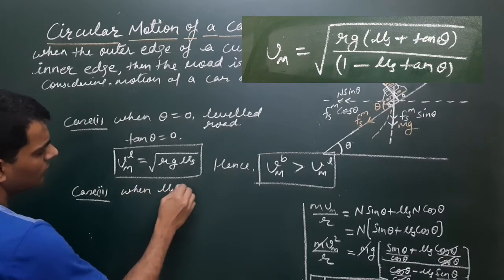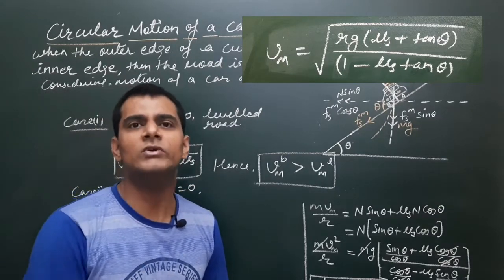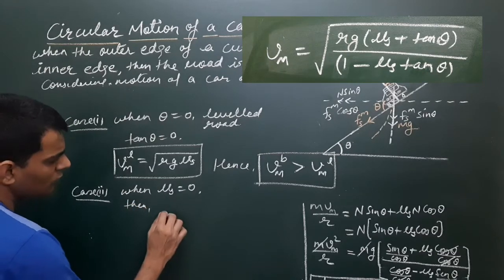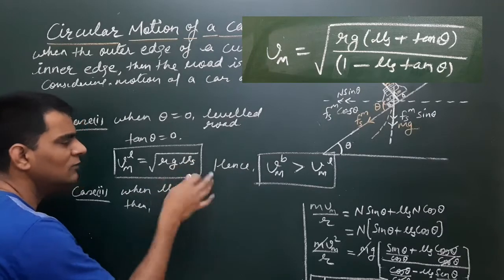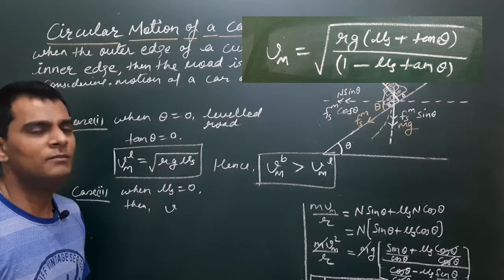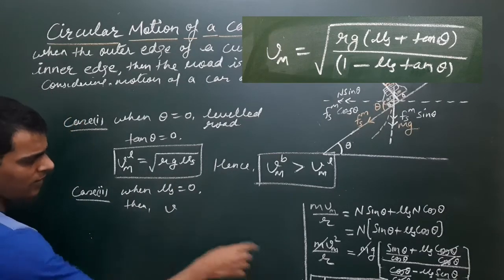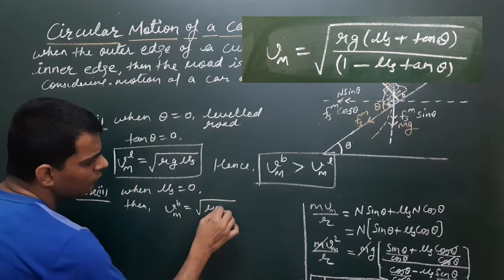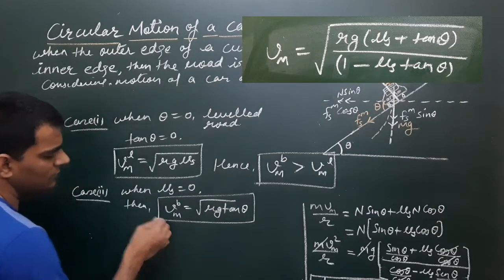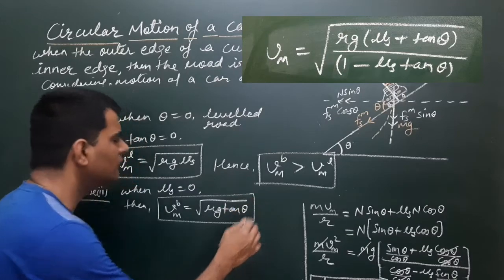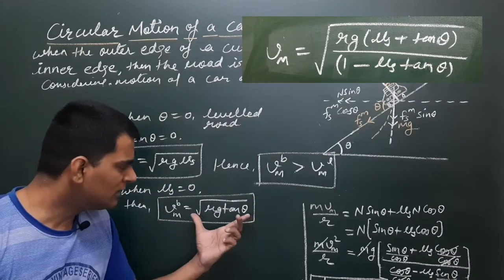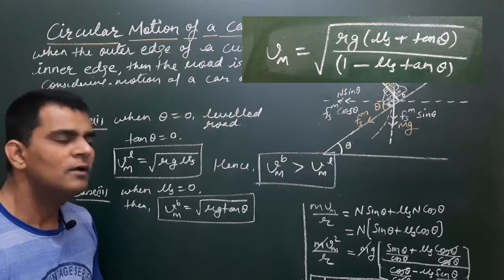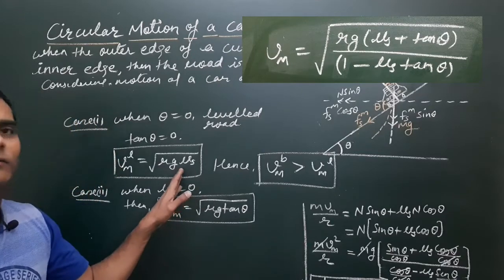Case 2: when μs = 0 — practically not possible but theoretically we can reduce friction to zero. On the banked road with μs = 0, v_max equals √(rg tanθ). So in the absence of friction on a banked road, the maximum velocity is √(rg tanθ). These are the two special cases for the given expression — one for the banked road and one for the level road.